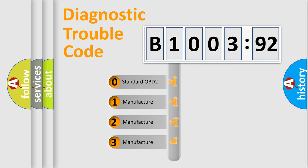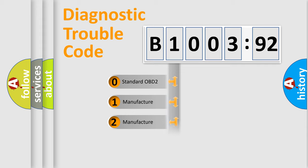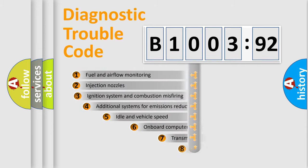If the second character is expressed as zero, it is a standardized error. In the case of numbers 1, 2, or 3, it is a manufacturer-specific expression of the car-specific error.